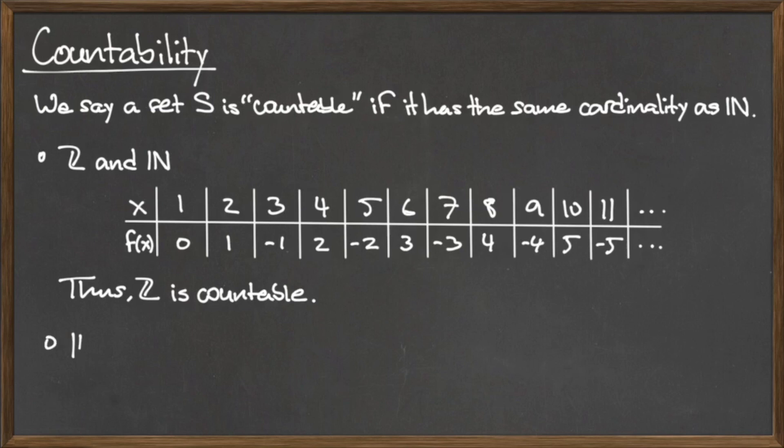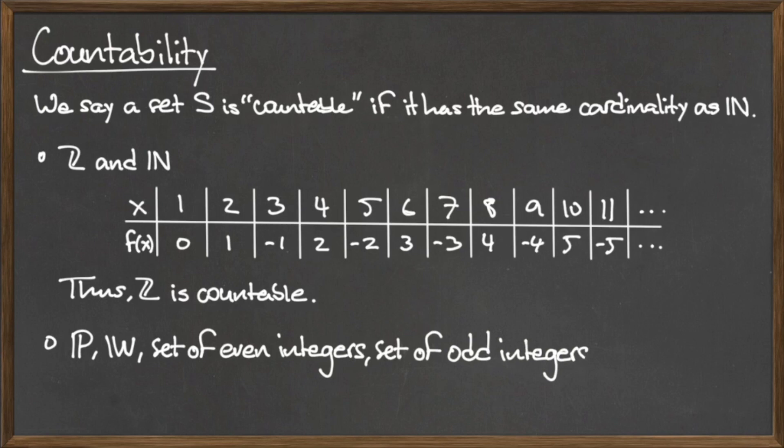Other examples of countable infinite sets include the prime numbers, the whole numbers, and the set of even and odd integers. This definition of countability for infinite sets implies that there are actually several different sizes of infinity, with the cardinality of the natural numbers representing the smallest size of infinity.